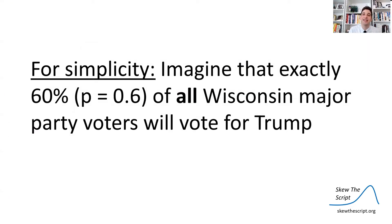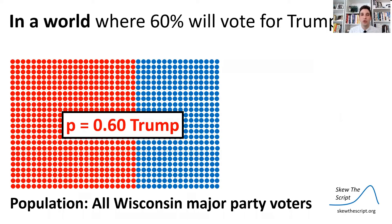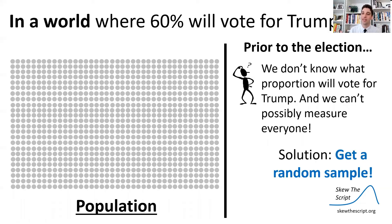For simplicity, imagine that exactly 60% of all Wisconsin major party voters will vote for Trump — so 60% will vote for Trump in the population. In a world where 60% of voters will vote for Trump, if you're a pollster trying to predict this outcome, you're not going to know that information because you don't have time to ask every single person in the whole state of millions of people. So instead, to estimate the true proportion voting for Trump, you can get a random sample — randomly sample 30 Wisconsinites and ask them who they're going to vote for.